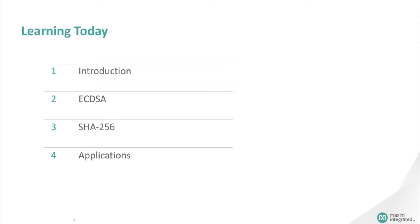We will discuss the two types of crypto algorithms used in authentication systems: an asymmetric algorithm called ECDSA, which stands for Elliptical Curve Digital Signature Algorithm, and a symmetric algorithm called SHA-256, which stands for Secure Hash Algorithm. The SHA-256 uses 256 bits in its computational methodology.